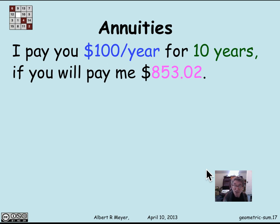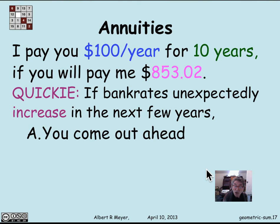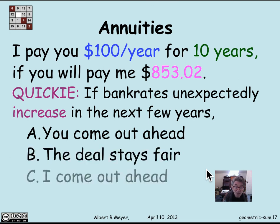That's a typical case where geometric series come up, and you'll see other examples in problems. Here's a quick thing to think about: suppose bank rates unexpectedly increase — say the Fed gets the economy moving and rates rise to 5%. You've already paid me the $853, and I've committed to paying you $100 a year for the next 10 years. Who comes out ahead if bank rates increase — you, or do I come out ahead? I'll close by letting you think about that question.